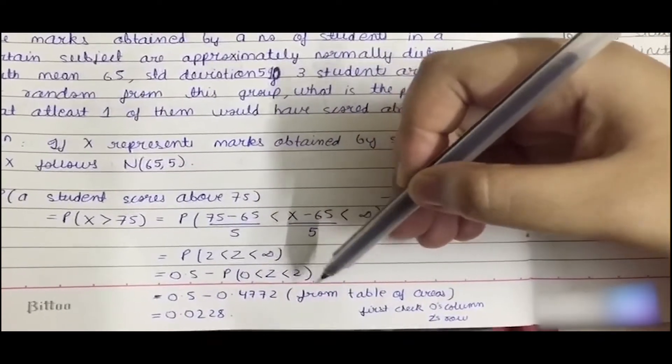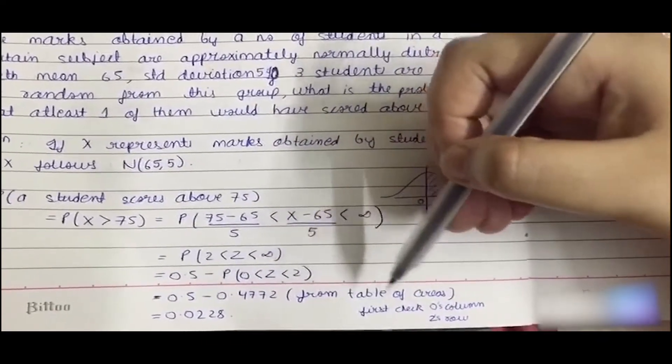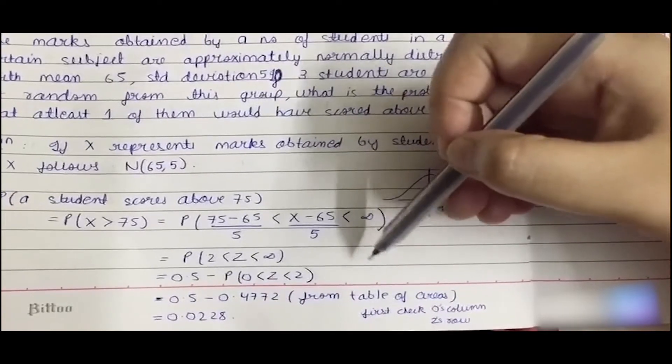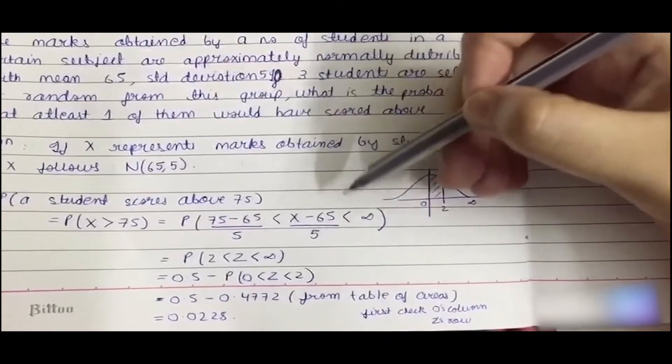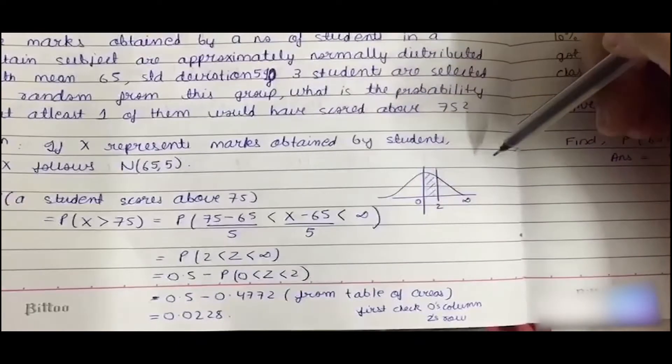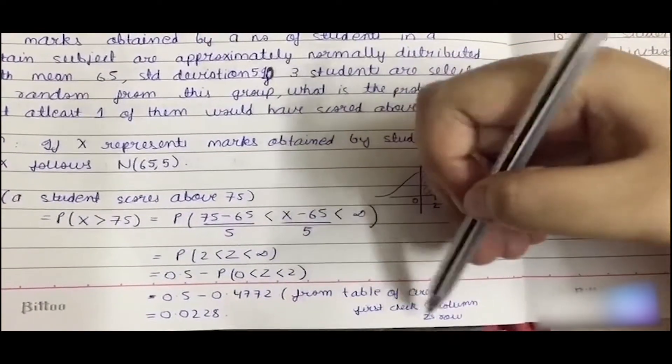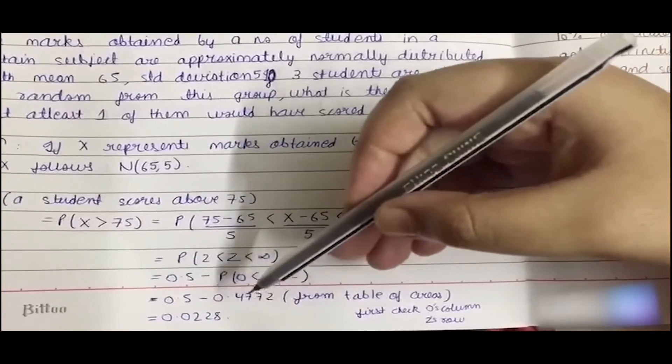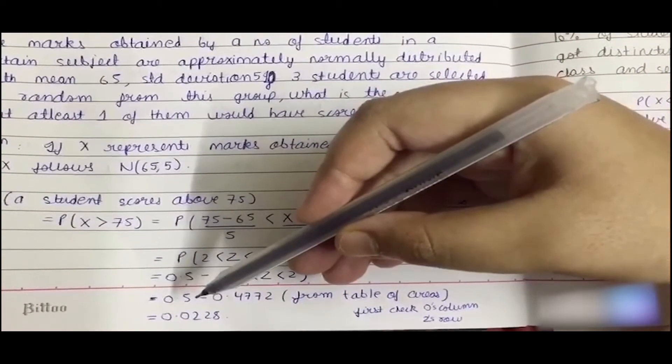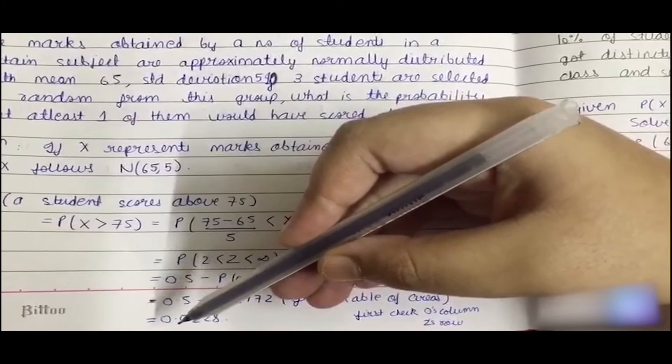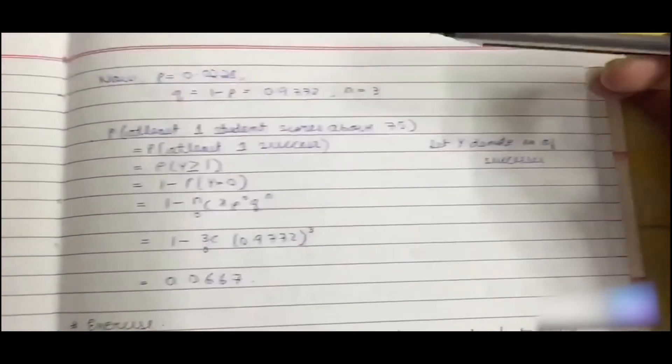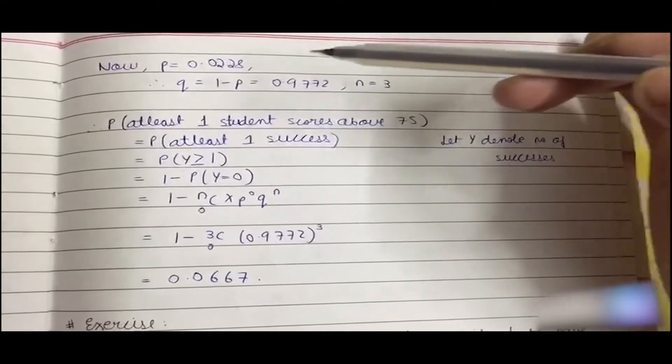For that we have to check the zeros column. There would be numbers written from 0 to something and 0 to here. So we'll check the zeros column and 2's row and we'll put that value and subtract it from 0.5, and we get the answer as 0.0228.